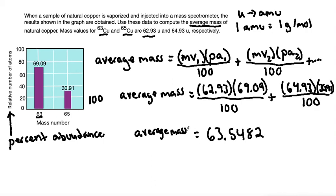And again, this average mass, because our mass values were given in u, this would be in a unit of u or gram per mole. Since all of our numbers are in four sig figs, let's round to four sig figs, which is 63.55 u or gram per mole.